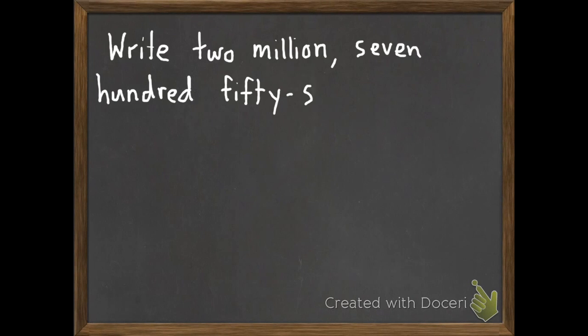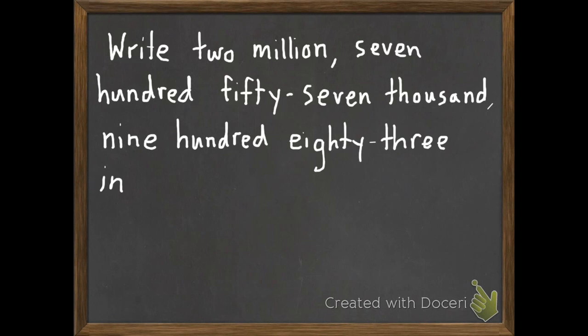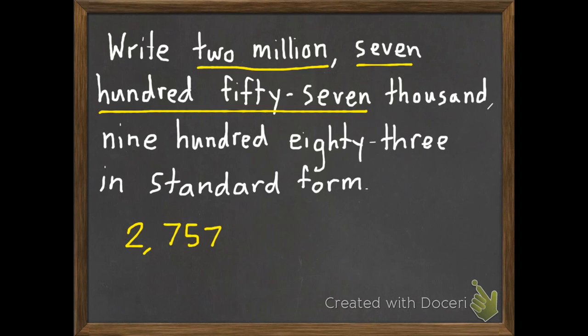My second example is the opposite. I need to write 2,757,983 in standard form. Like I said, if you take it in chunks, it's not quite as scary as it looks at first. We have 2,000,000. So, 2, then my comma for million. 757,000. So, I need another comma. 983. And that's the end, so I don't need anything else.